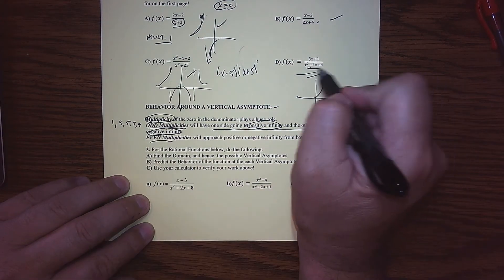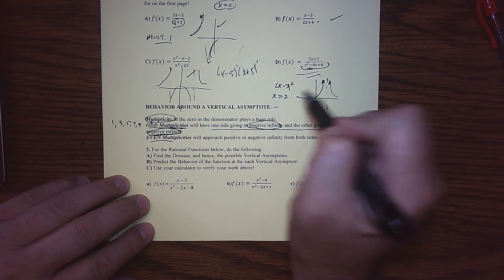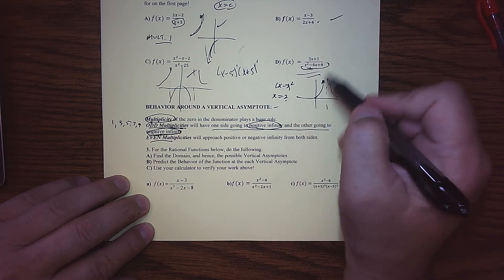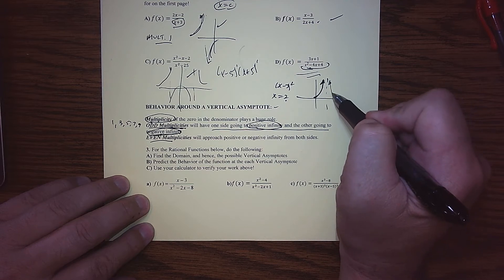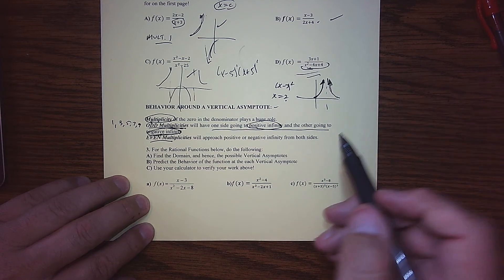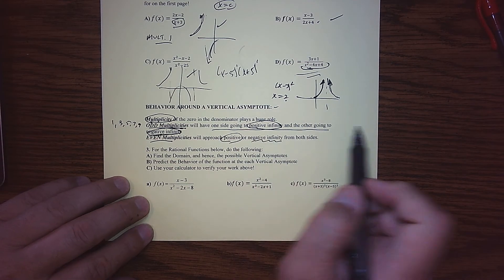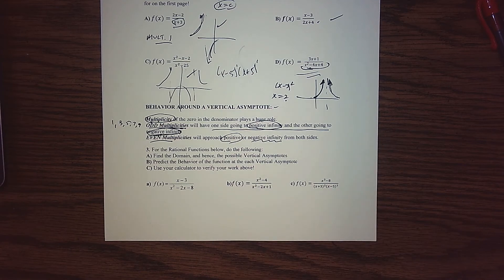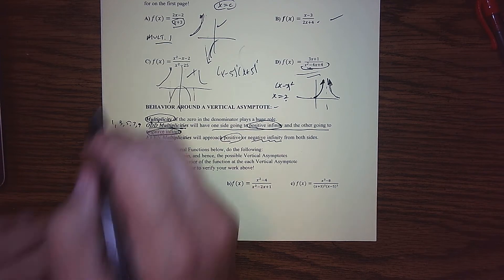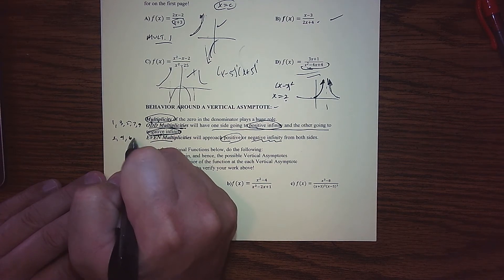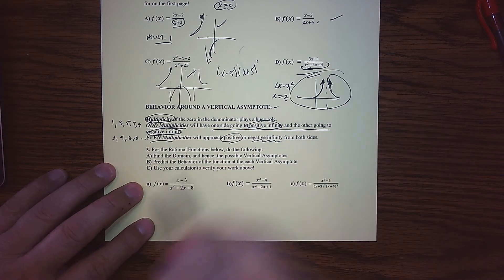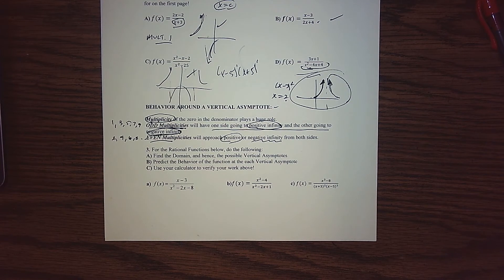For even multiplicities — this one right here, when we factored it, we got x minus 2 squared. So the zero at 2 had an even multiplicity, and what happens with an even multiplicity is that we end up going to the same direction on both sides. For the example shown, we went to positive infinity in both directions, but there are some examples that go to negative infinity — that just depends on the function. So if we have a multiplicity of 2, 4, 6, 8, etc., the behavior around the vertical asymptote will be the same on both sides.